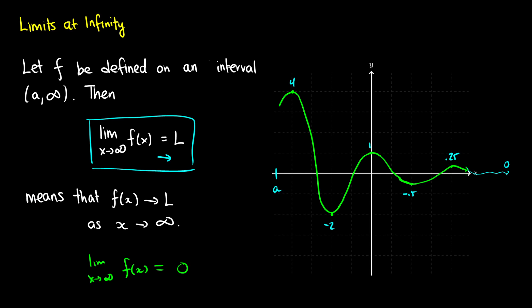This isn't just in the positive direction — we could do the negative direction as well. If we think about negative infinity instead, we would simply change the definition. We would have the interval from negative infinity to a, and then x approaching negative infinity, which would just reverse the direction of this curve.